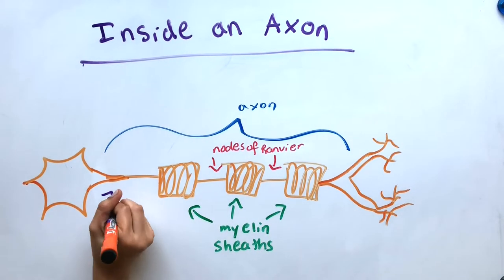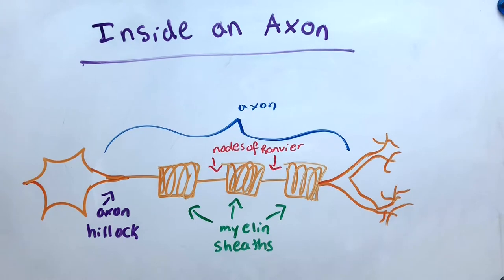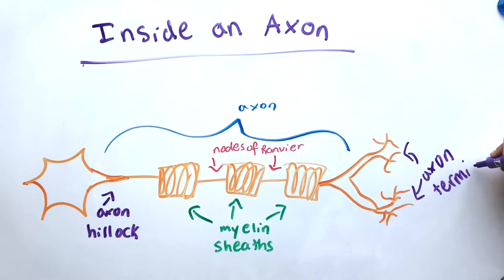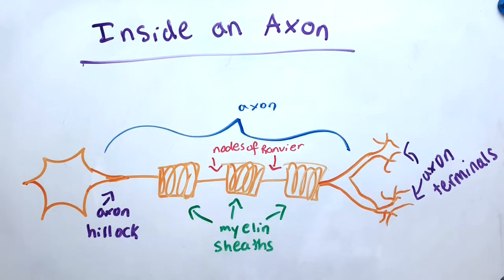The beginning of an axon that receives information is the axon hillock and the axon terminal is the end of an axon, where axons transmit information.